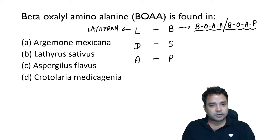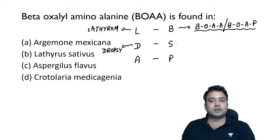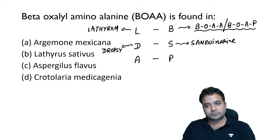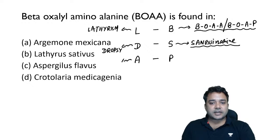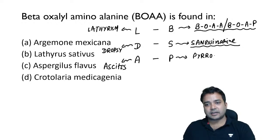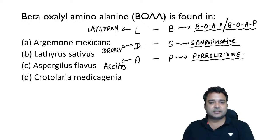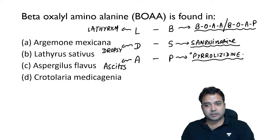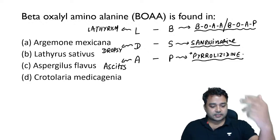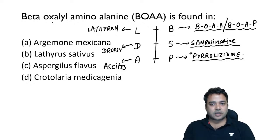D for dropsy — epidemic dropsy occurs due to the toxic agent sanguinarine present in Argemone mexicana oil. A for ascites — endemic ascites occurs due to P for pyrrolizidine alkaloids present in Crotalaria plants, which act as adulterants for millet crops. So wherever you see BOAA, it goes with L for lathyrism — this saves time and maintains accuracy.